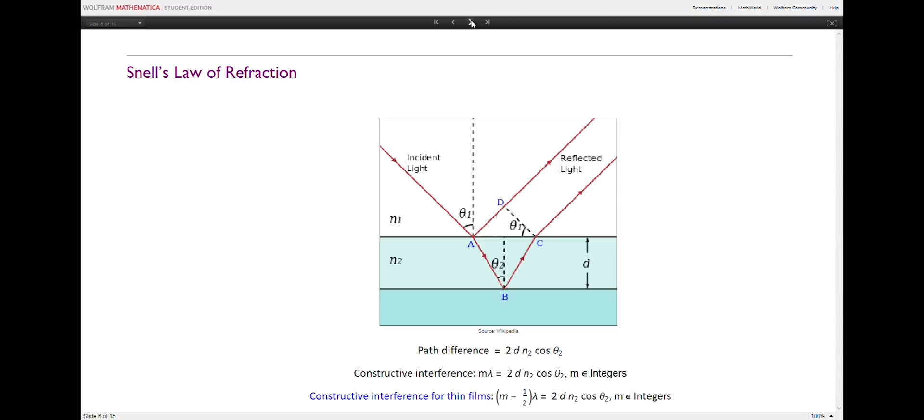When the medium a wave is traveling into has a refractive index that is greater than the index for the medium that the wave is coming from, that is, n2 is greater than n1, there is one extra caveat. The reflected wave has a 180 degree phase shift. In that case, the condition for constructive interference is that the path difference must be a half integer multiple of the incident light's wavelength.